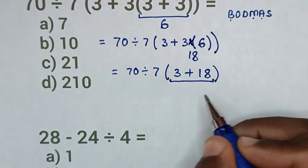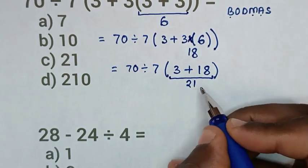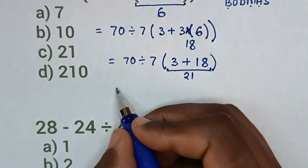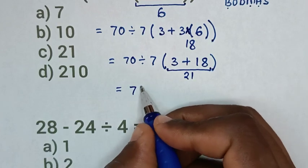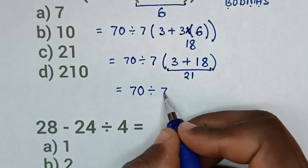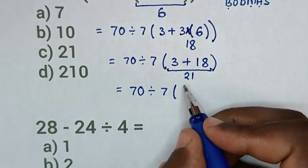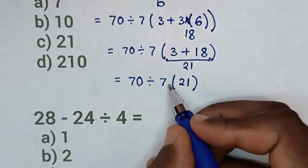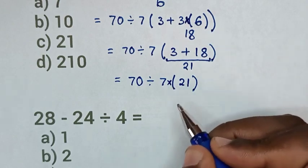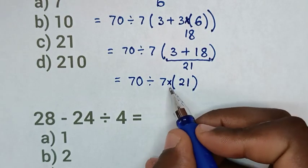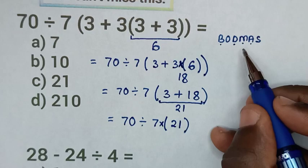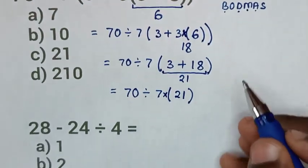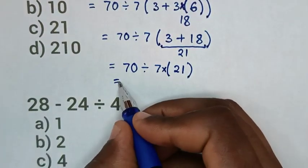We'll do this addition of 3 plus 18, which is 21. So it will be equal to 70 divided by 7, then bracket 21. In here we have division and multiplication. We'll start with division first, then multiplication.